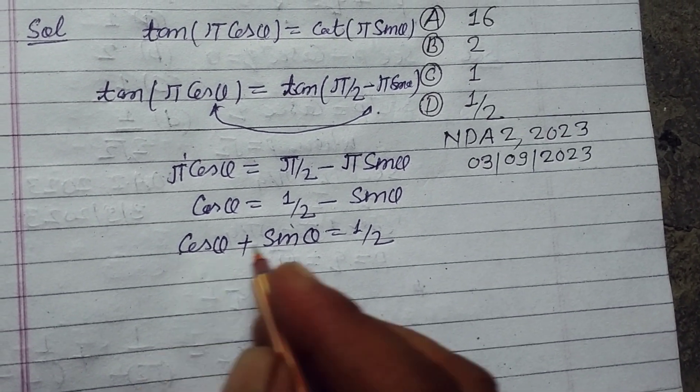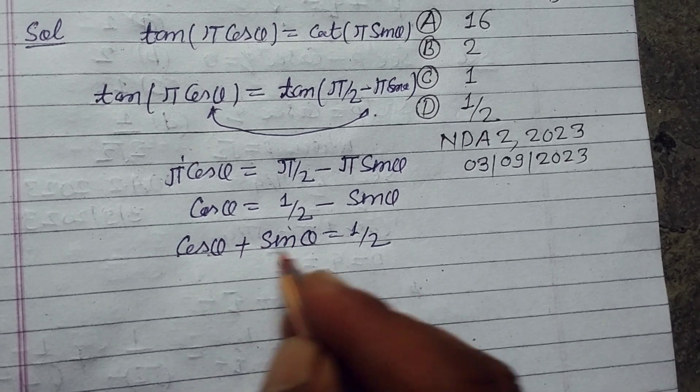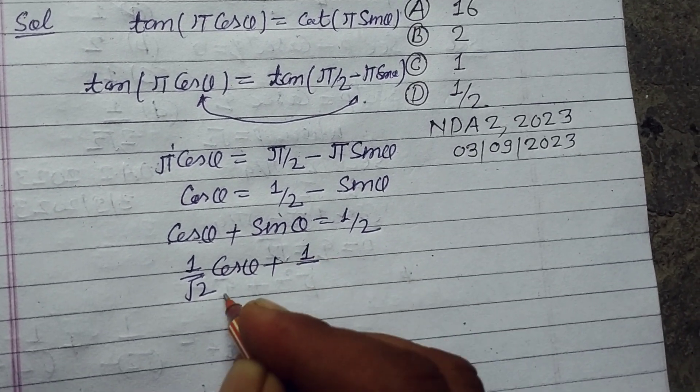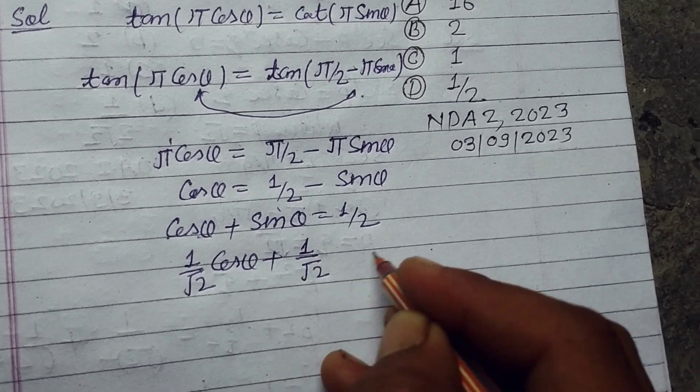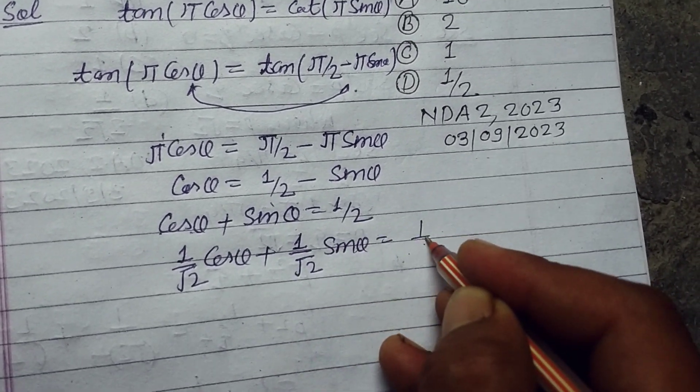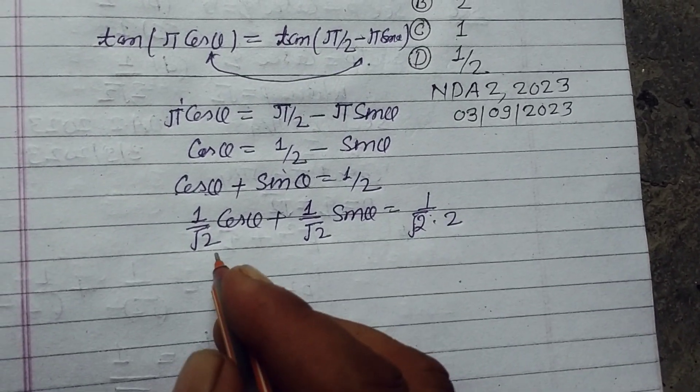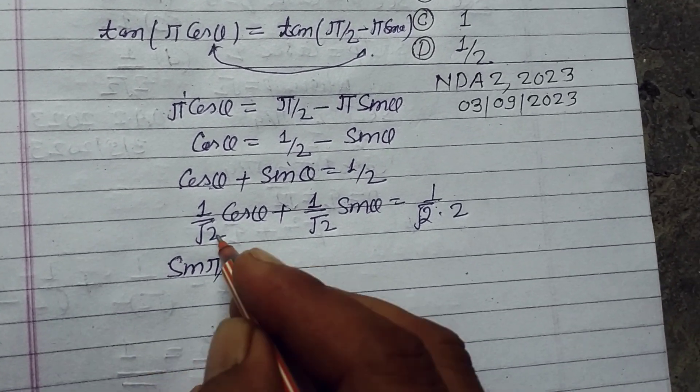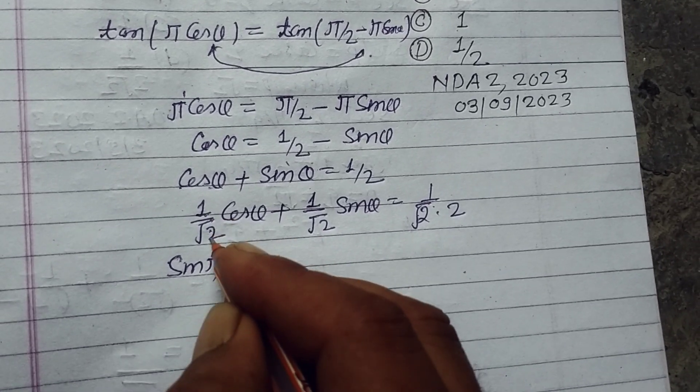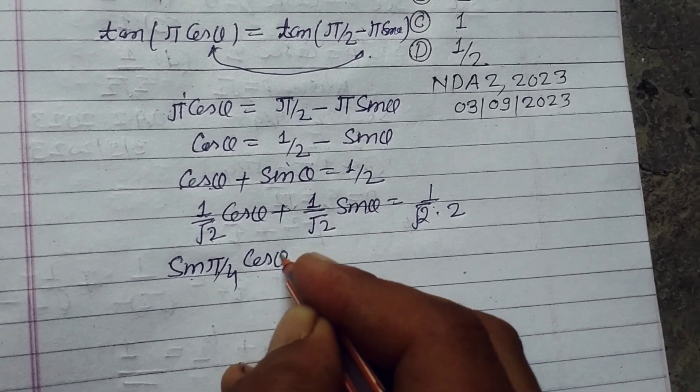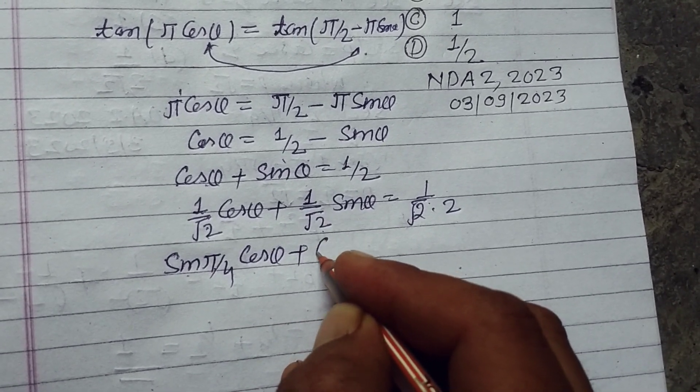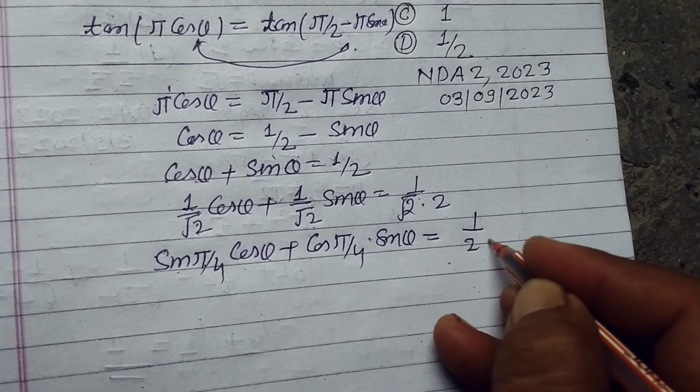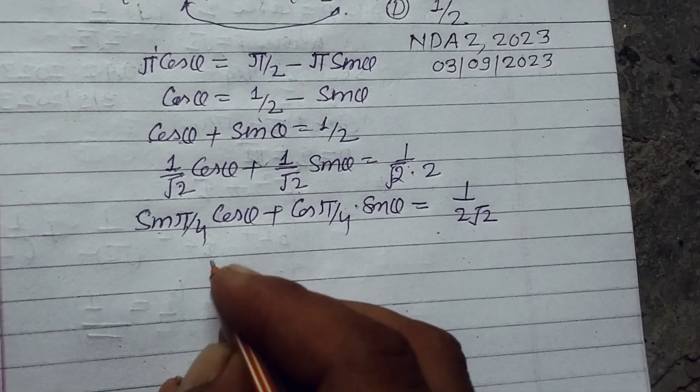Now we multiply all three terms on both sides by root 2. We get (1/√2)cos θ + (1/√2)sin θ = 1/√2 × 1/2, which equals 1/(2√2). Now 1/√2 is the value of sin 45° or sin(π/4), and also the value of cos 45° or cos(π/4). Student, using sin A cos B + cos A sin B formula,